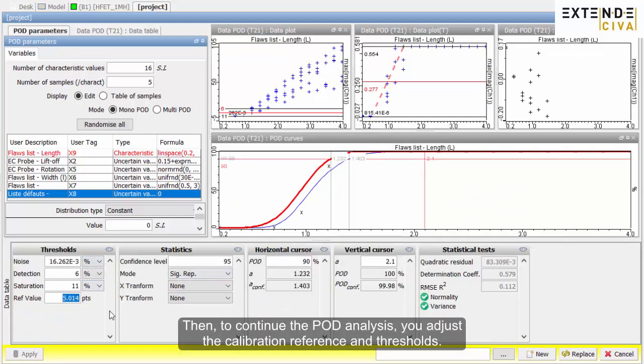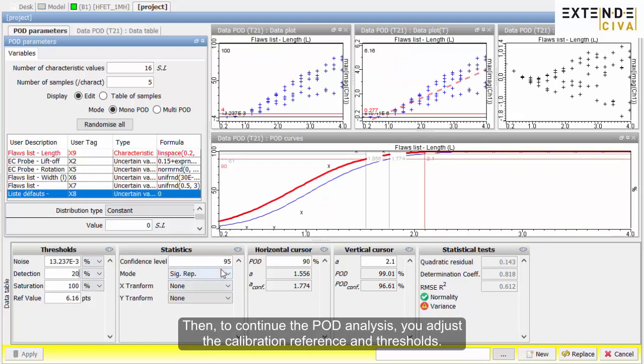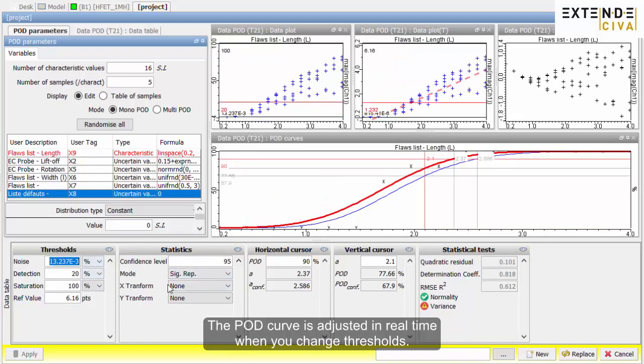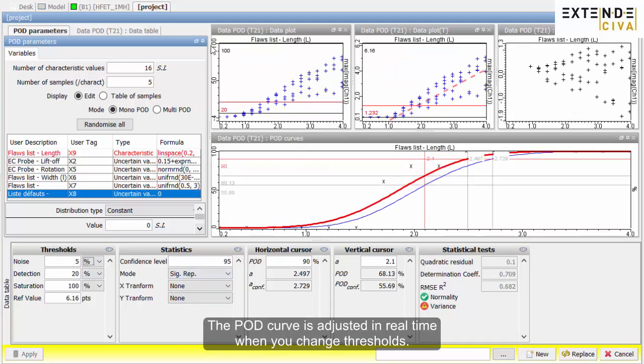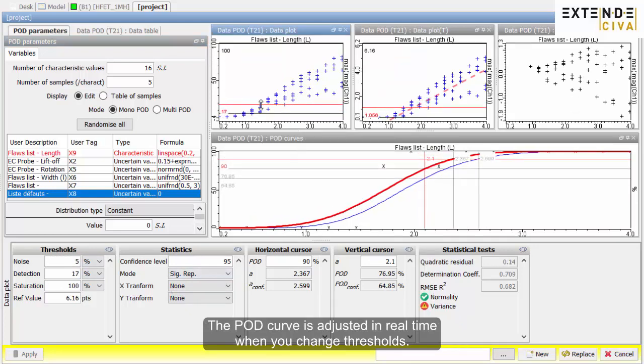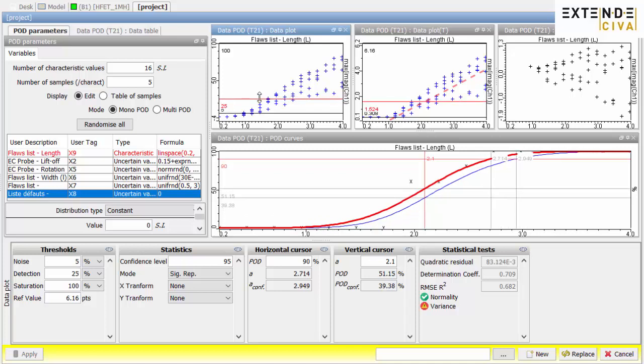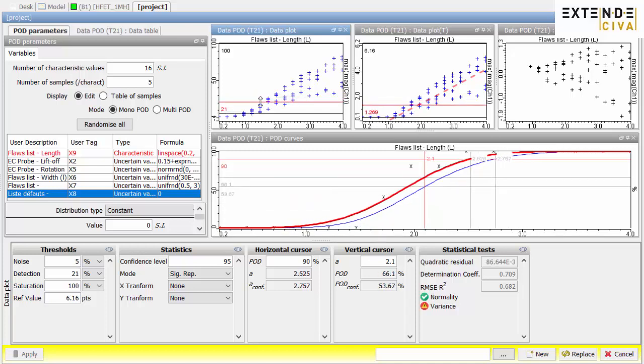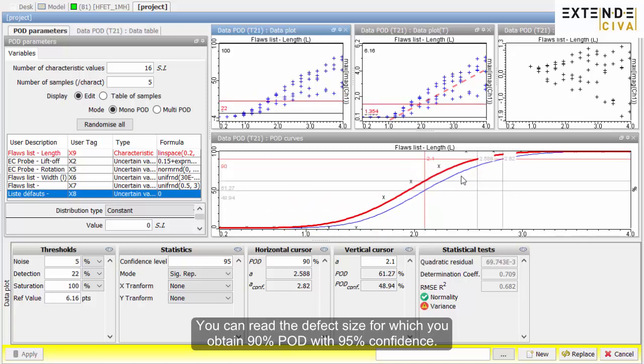Then, to continue the POD analysis, you adjust the calibration reference and thresholds. The POD curve is adjusted in real-time when you change thresholds. You can read the defect size for which you obtain 90% POD with 95% confidence.